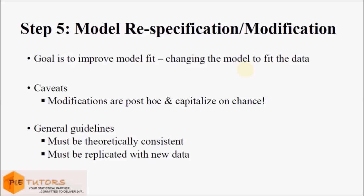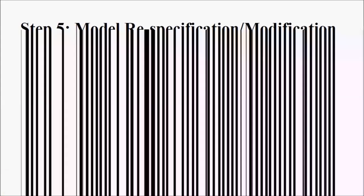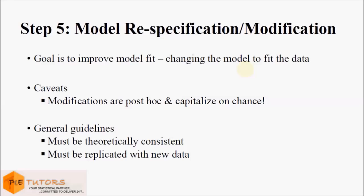The goal in this step is to improve the overall model fit. This step involves changing the model to fit the data. Using modification indices, we can determine what modifications can be done to the model, such as adding a correlation between error terms or other modifications. Modification indices give an estimate about the improvement in the model by suggested respecification.